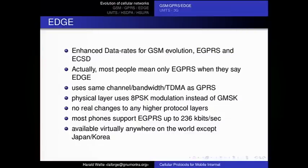The bandwidth was around 56 to 114 kilobits per second, though it depends on the exact multi-slot class support of the mobile station and base station. GPRS was and is available virtually anywhere in the world except Japan and Korea because they had different 2G/2.5G systems. EDGE means Enhanced Data Rates for GSM Evolution.